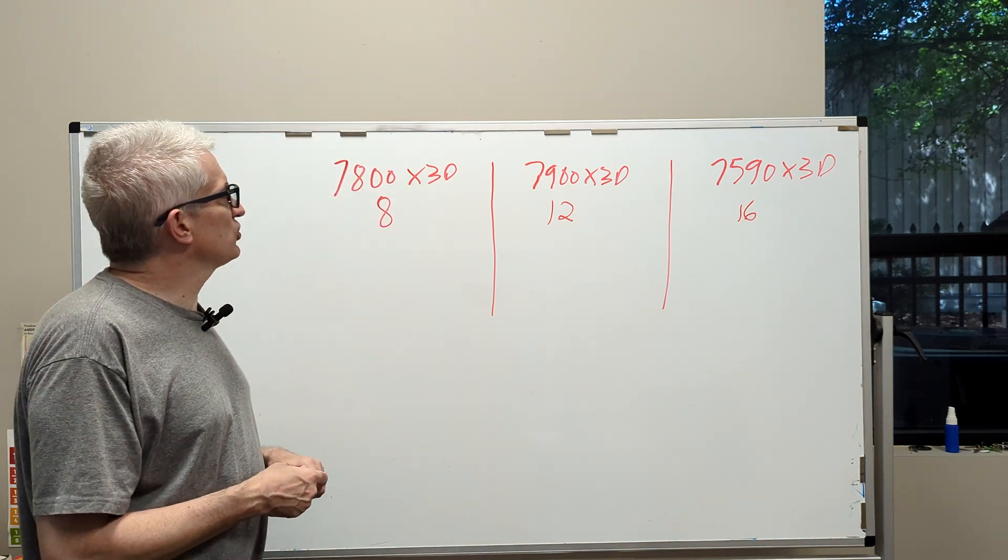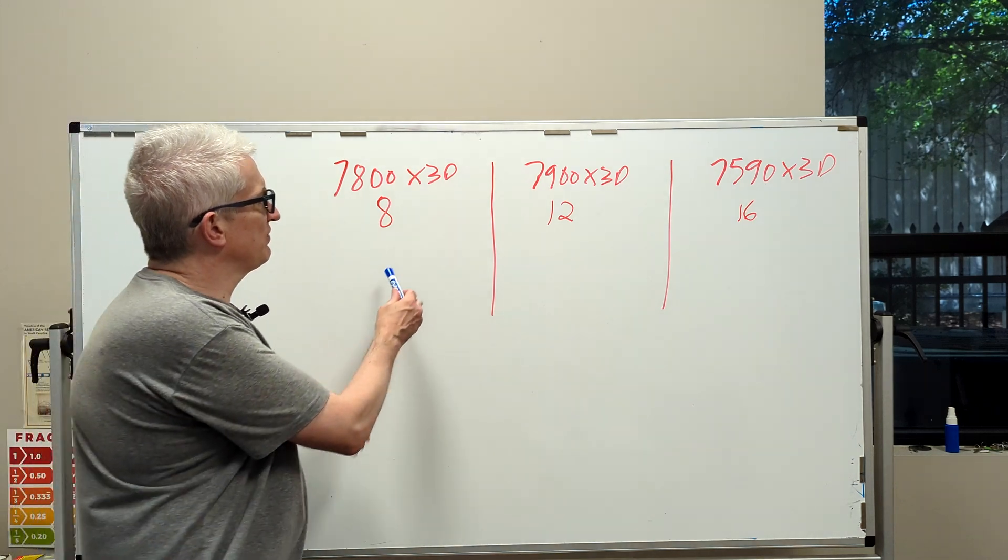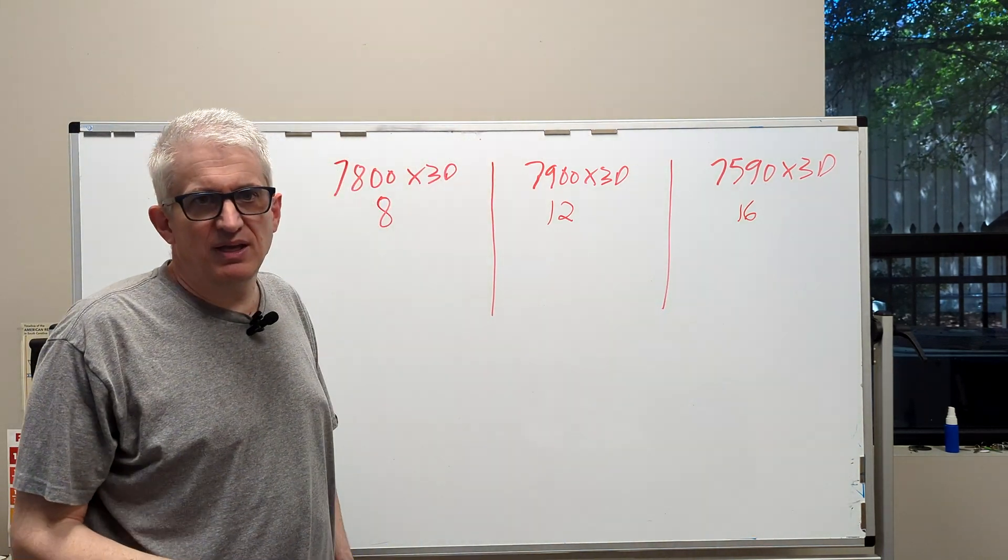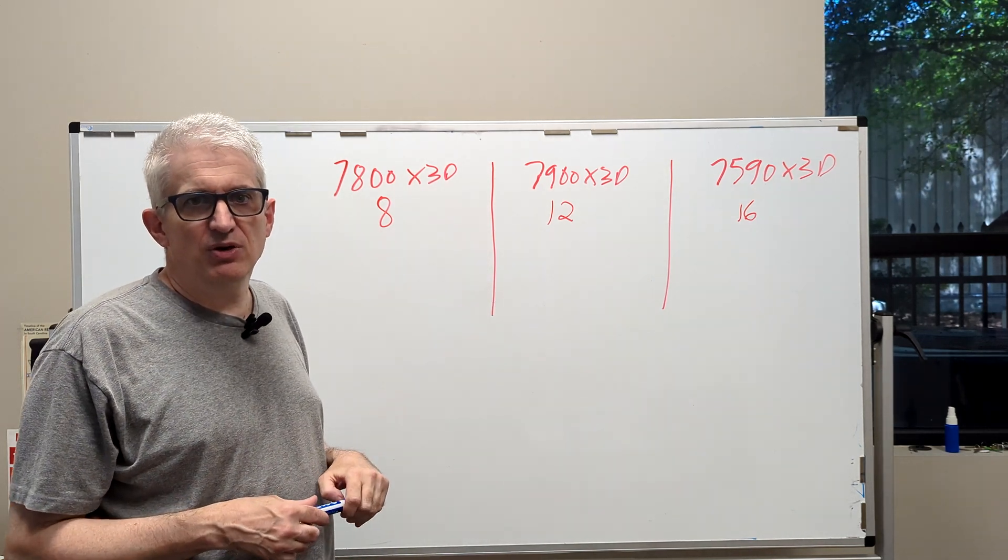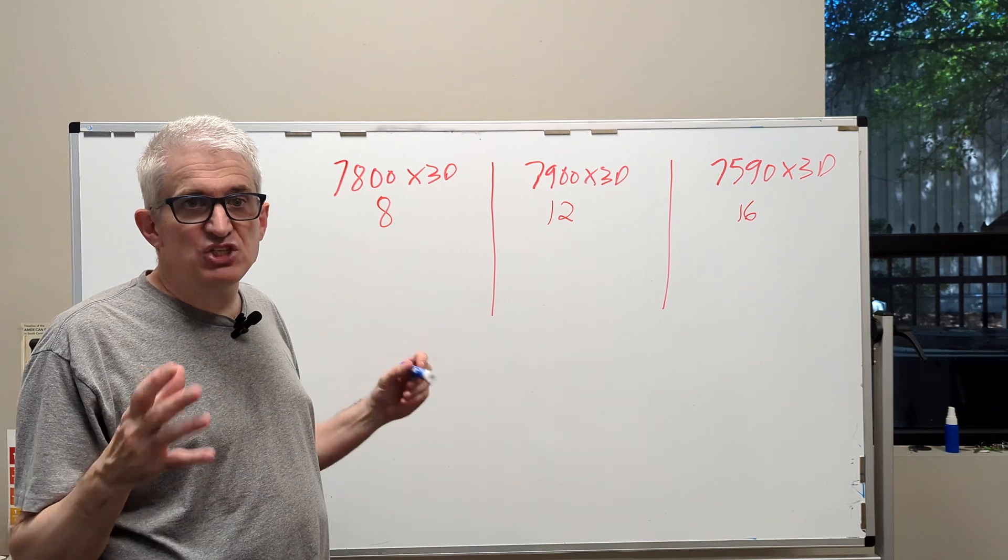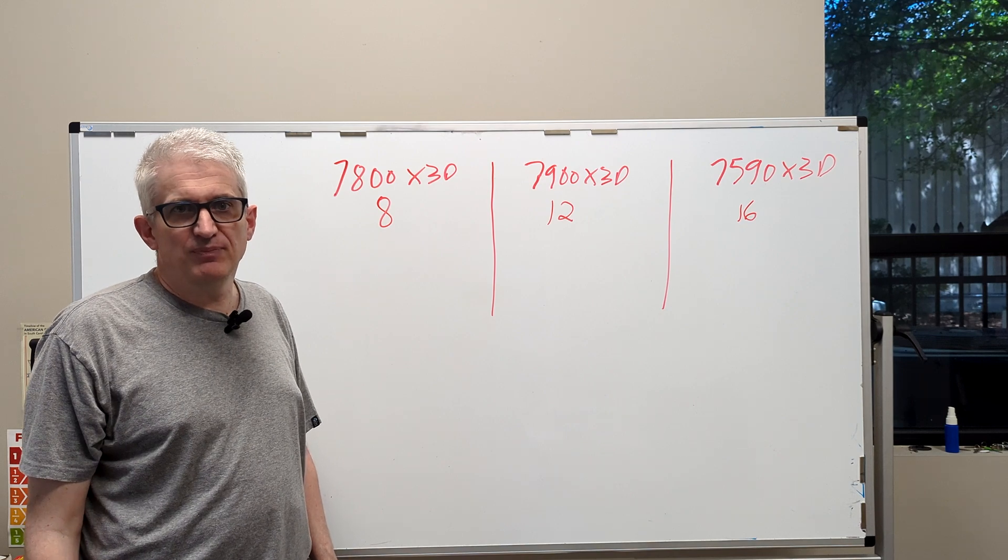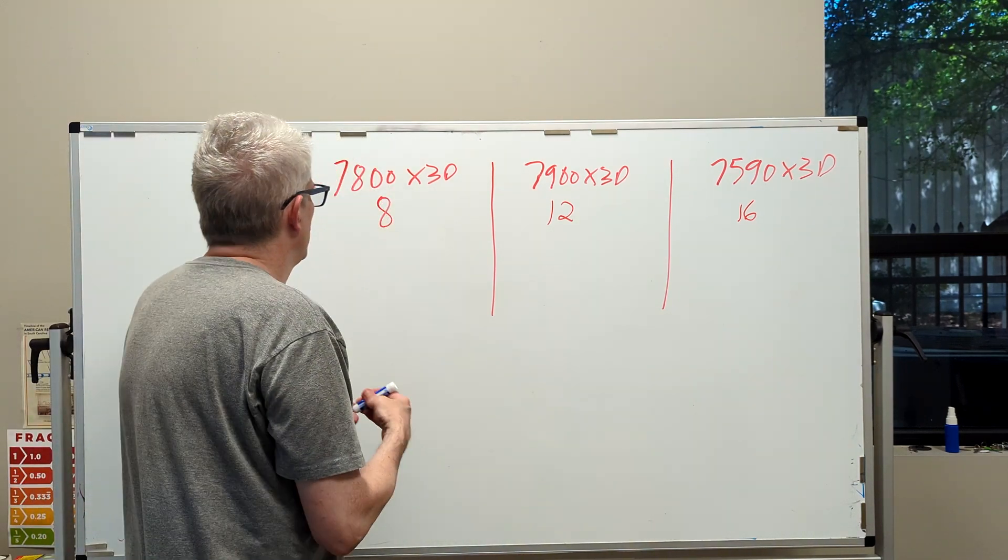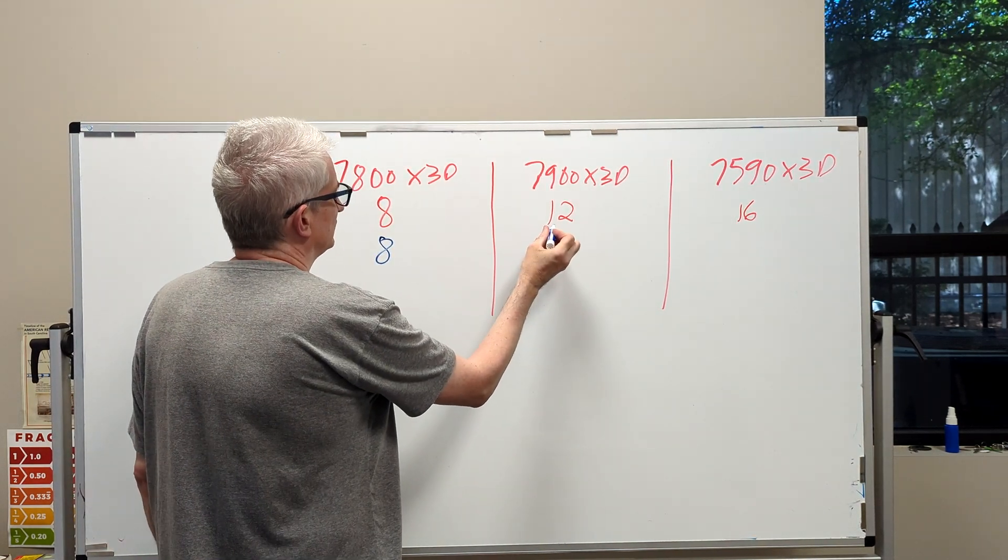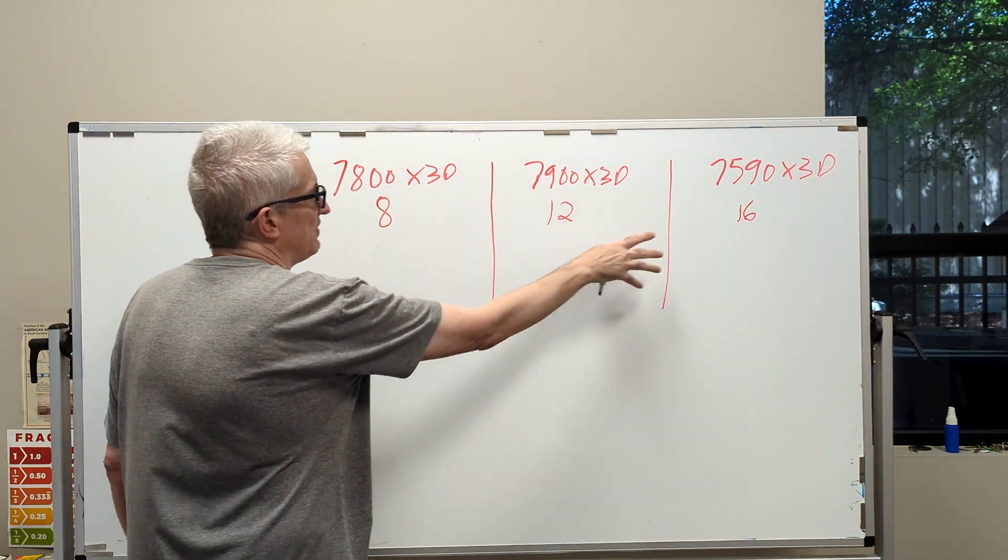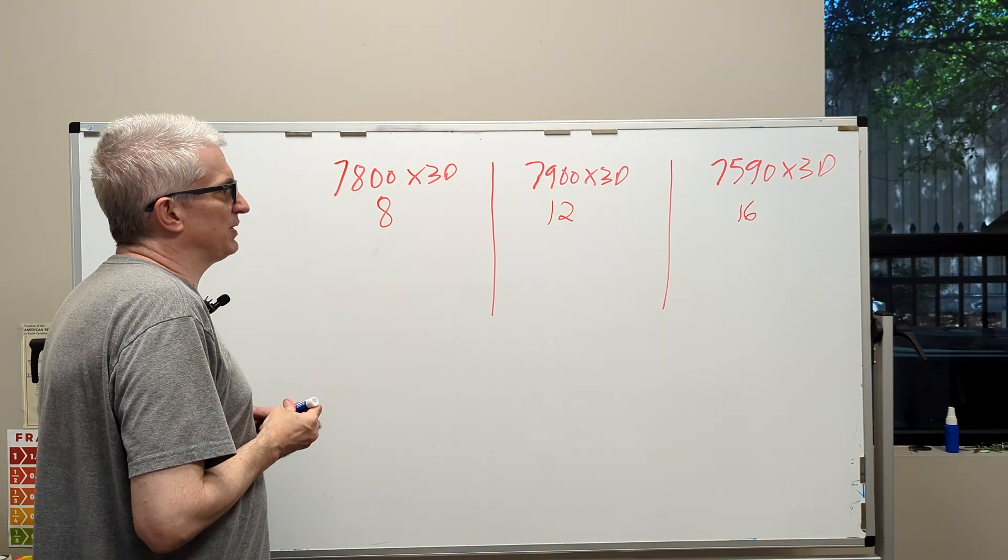Of course we're speaking in generalities - sure, you might find slight variances between one and the other, but in general you should think of these as equal in gaming to each other. So how are they different? This has 8 cores, this has 12 cores, and this has 16 cores. The reason they're equal in gaming is, first of all, gaming doesn't need that many cores.